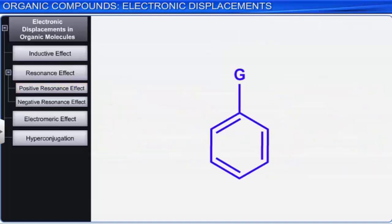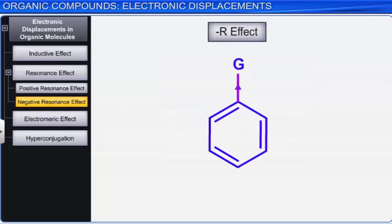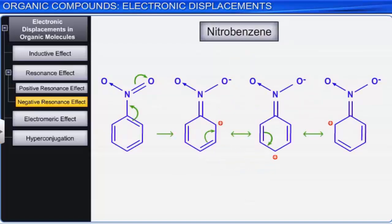When the electron shift takes place in the direction of the atom or substituent group attached to the conjugated system, it is called the negative resonance effect. Nitro group, cyano group, and carbonyl group are examples of negative resonance effect groups. The negative resonance effect decreases the electron density at ortho- and para-positions in the molecule. For example, in nitrobenzene, as nitrogen withdraws electron density from the ortho- and para-positions in the benzene ring, the electron density decreases at those positions.